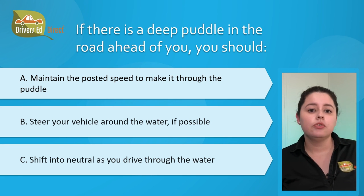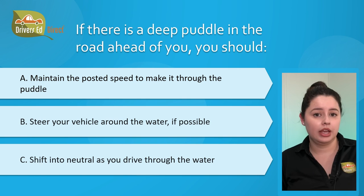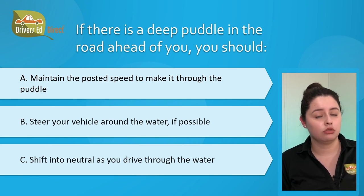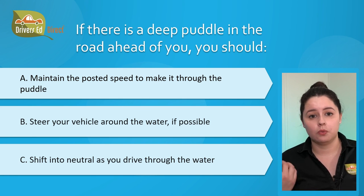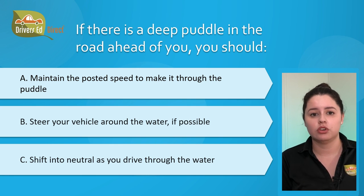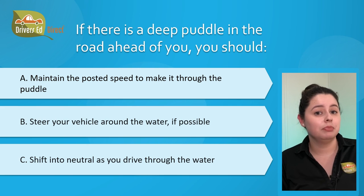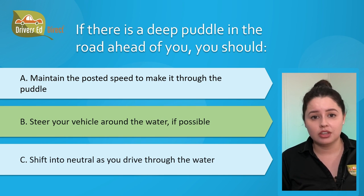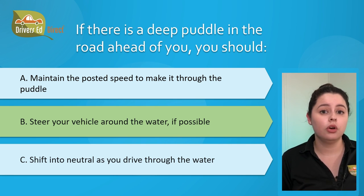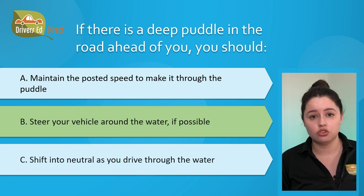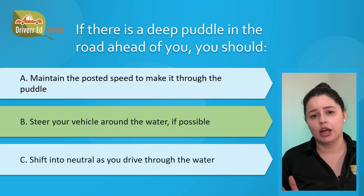And now our final question, number twenty-five: if there is a deep puddle in the road ahead, you should: A) maintain the posted speed to make it through the puddle, B) steer your vehicle around the water if possible, or C) shift into neutral as you drive through the water. The correct answer is B, steer your vehicle around the water if possible. To avoid skidding on slick surfaces, do not drive on especially slippery areas such as oil, ice patches, deep puddles, or wet leaves. Always try to drive on a safe surface with good traction, preferably a dry solid surface.